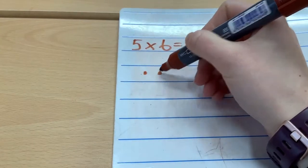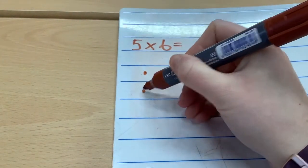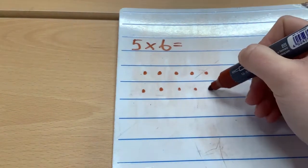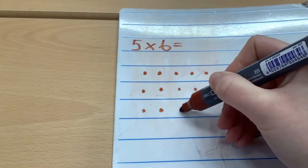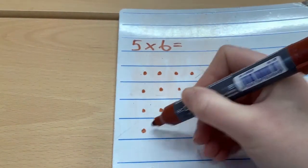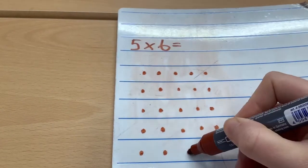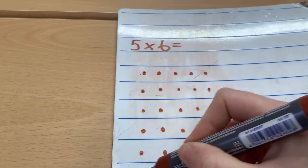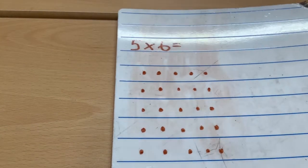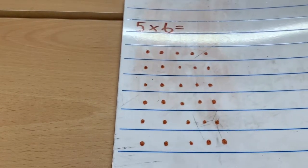1, 2, 3, 4, 5. And do that 6 times. So now I've drawn my array.